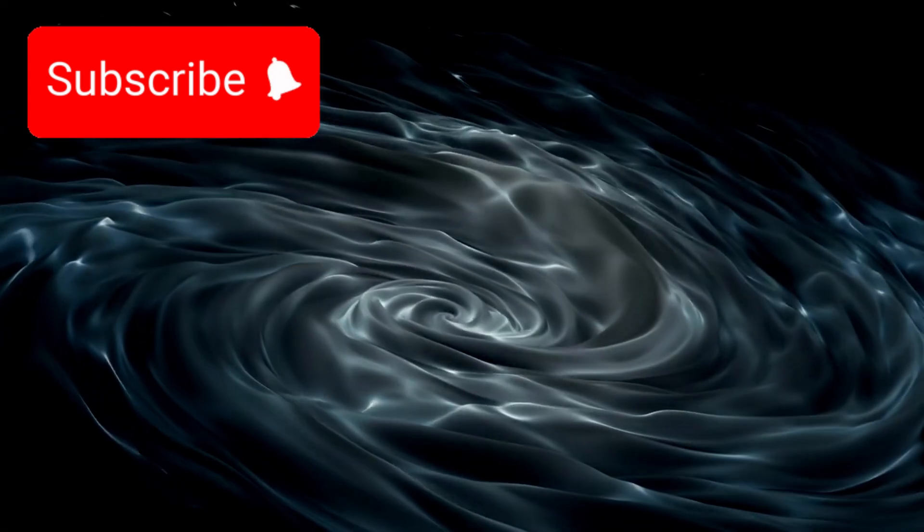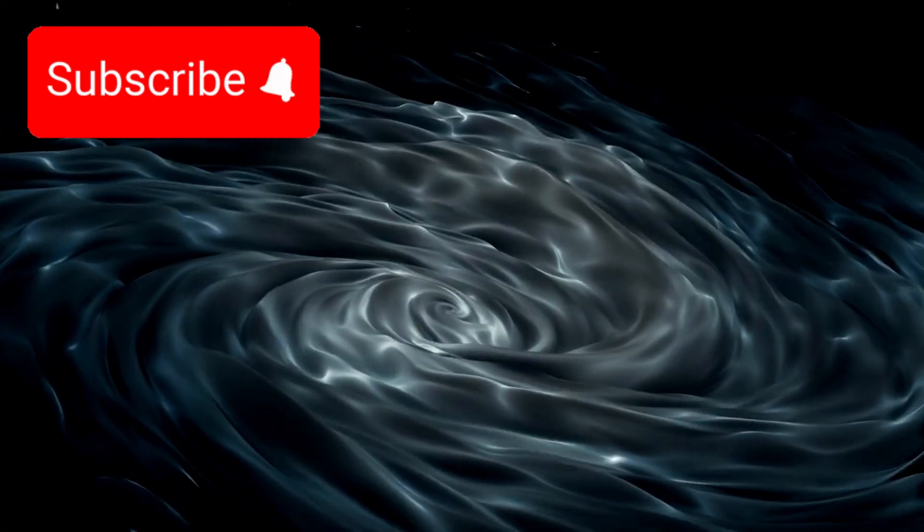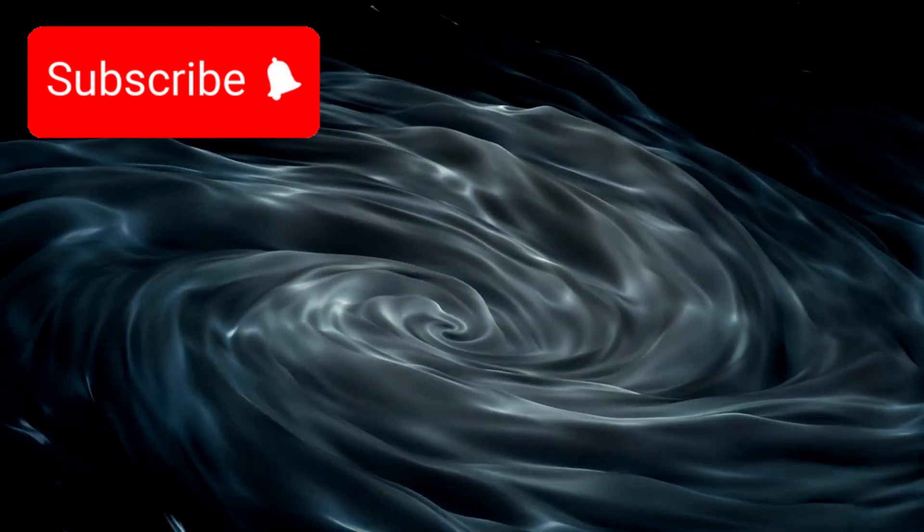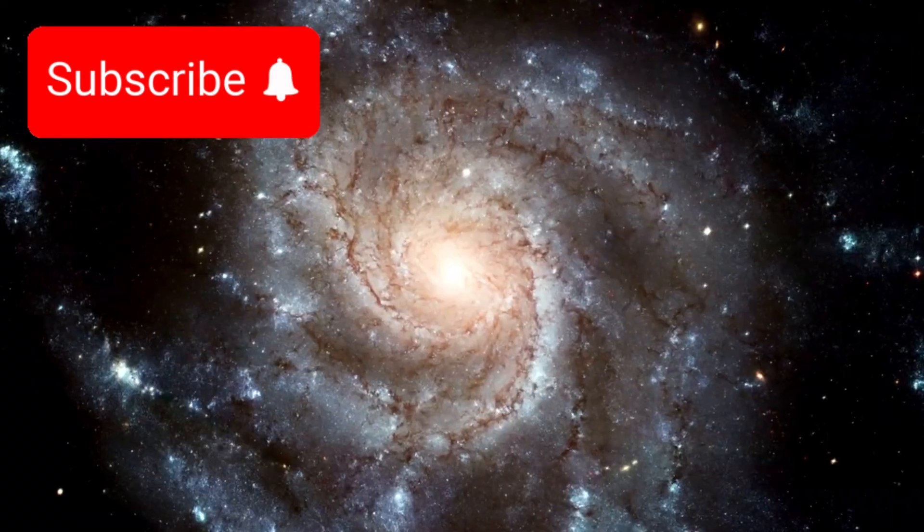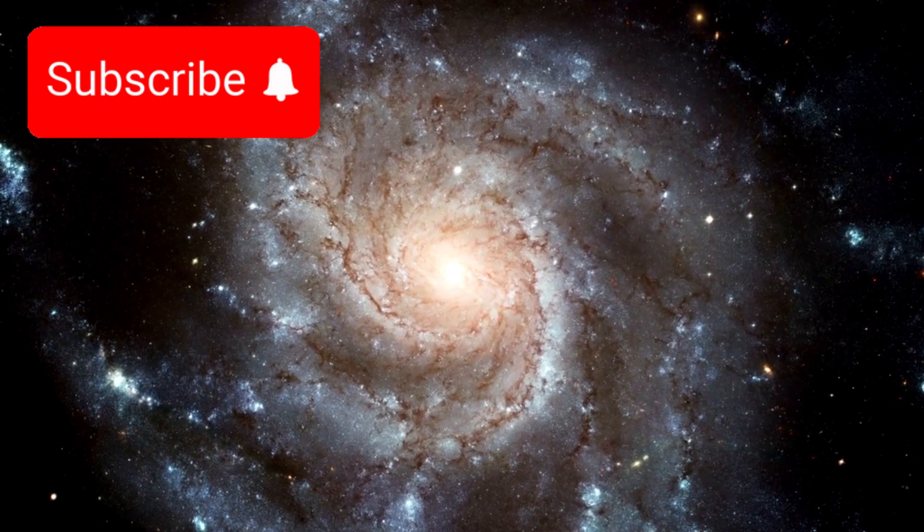Some theories propose that what we call dark matter might actually be gravity leaking into hidden dimensions. If true, this would explain why galaxies rotate faster than visible matter allows. The anomalies in Pandora's cluster appear strongest in regions of high dark matter density.